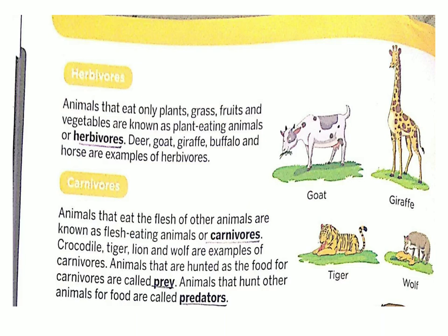These animals only eat the flesh of other animals. Animals that are hunted as food for carnivores are called prey — jinka shikar hota hai unhain prey kaha jata hai. Animals that hunt other animals for food are called predators — aur woh animals jo shikar karte hain, unhain predators kaha jata hai.